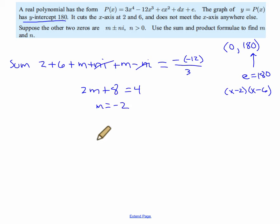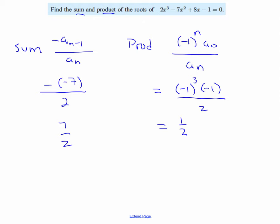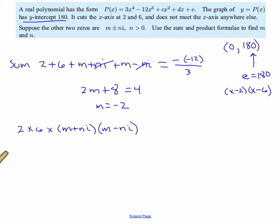This is good news. So the product of the roots, if we do all of the roots, 2 times 6 times m plus n i times m minus n i, we know again from the sum and product theorem that it's equal to negative 1 to the n times a_0 over a_n. So that's going to be negative 1 to the fourth power, so we don't have to worry about it because it's positive, times the constant over the coefficient of the first term.